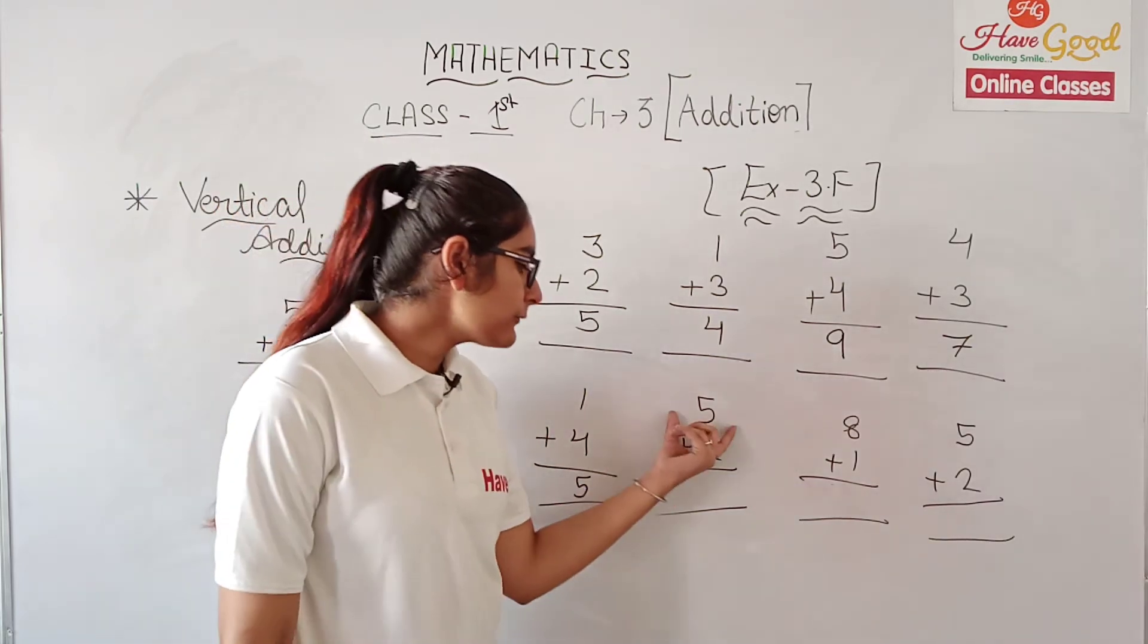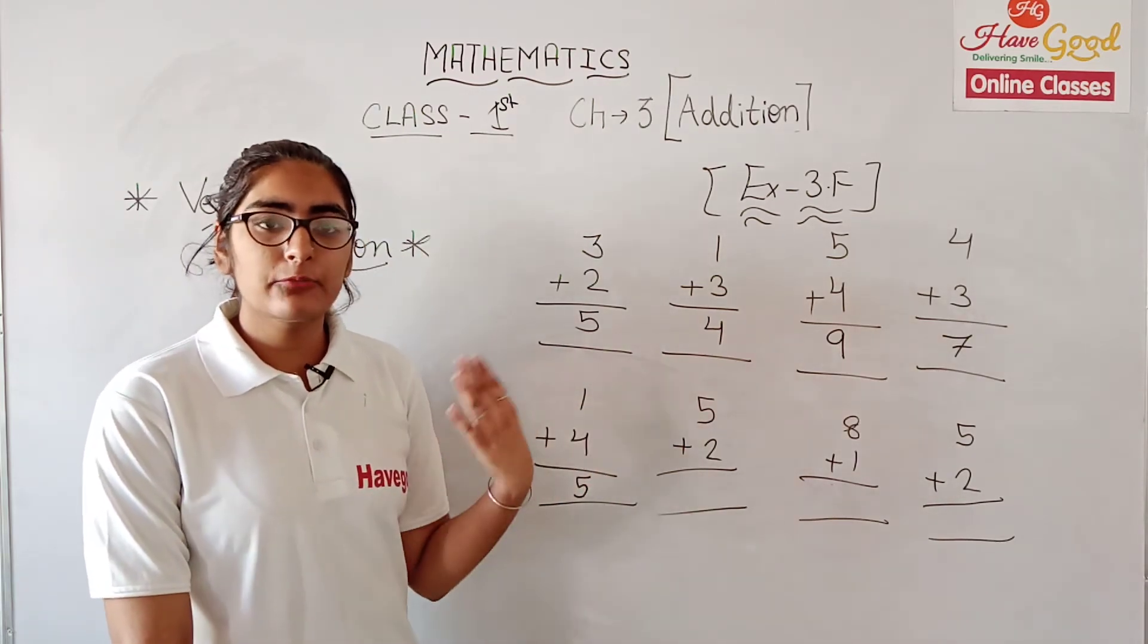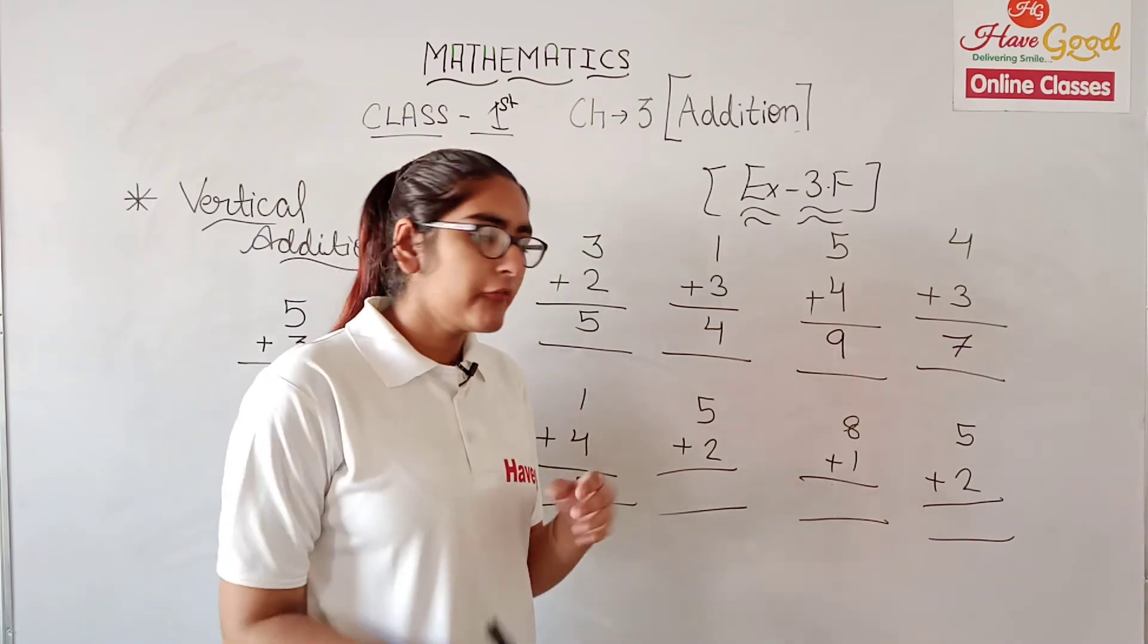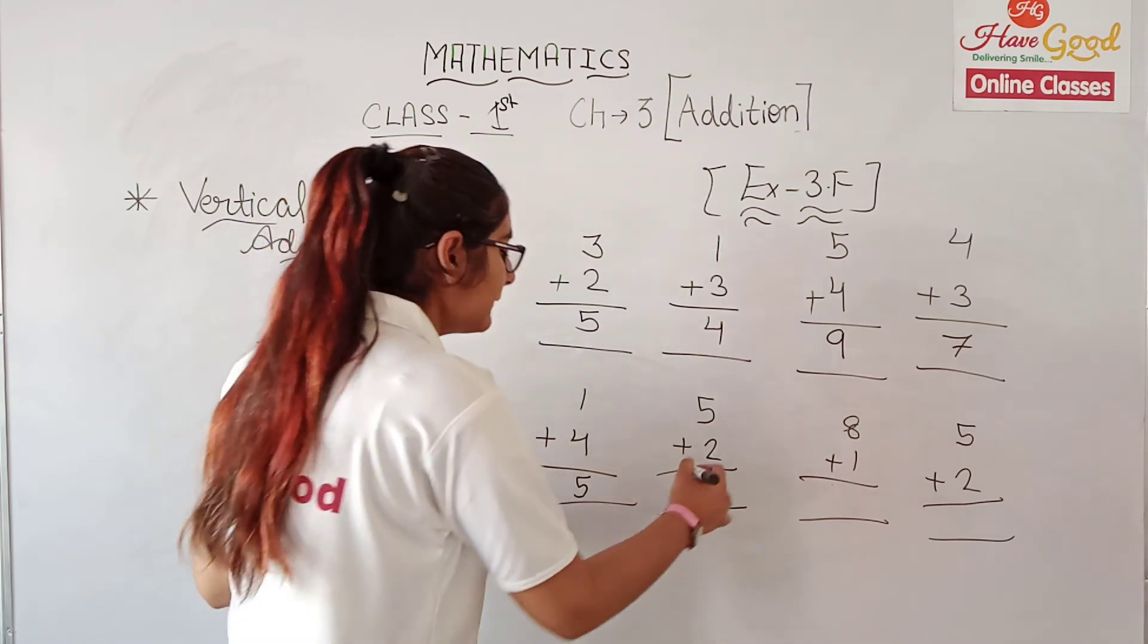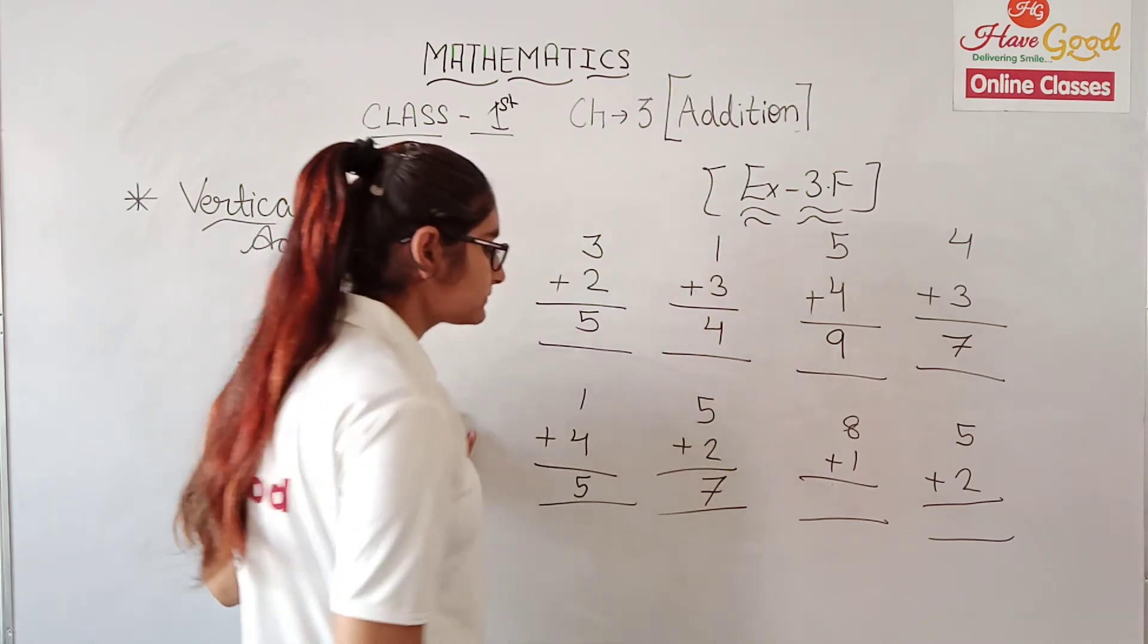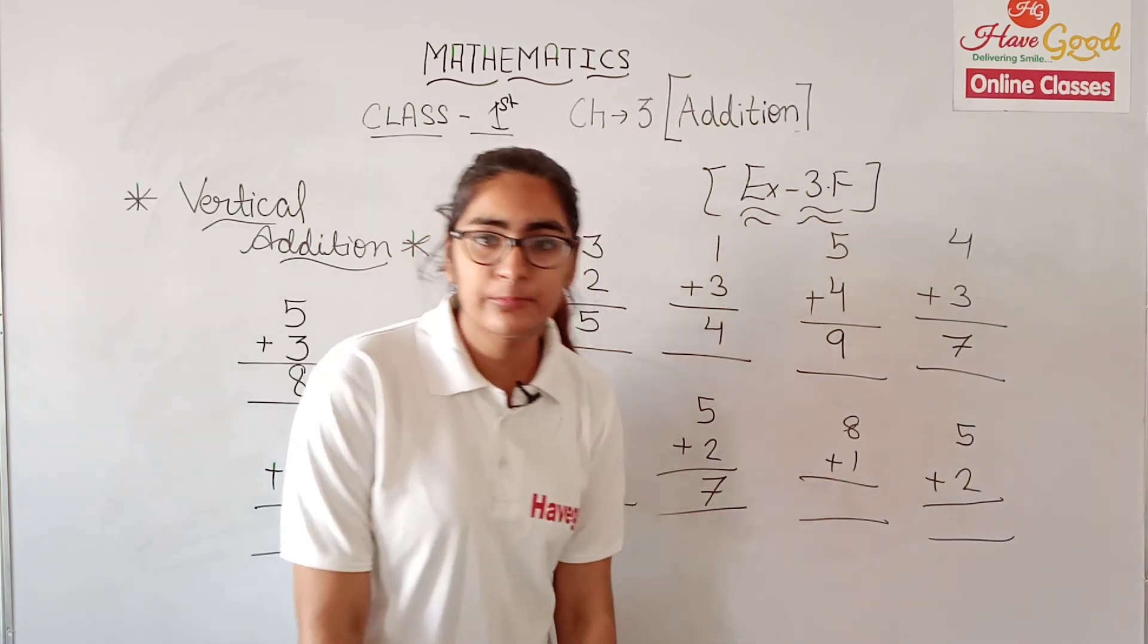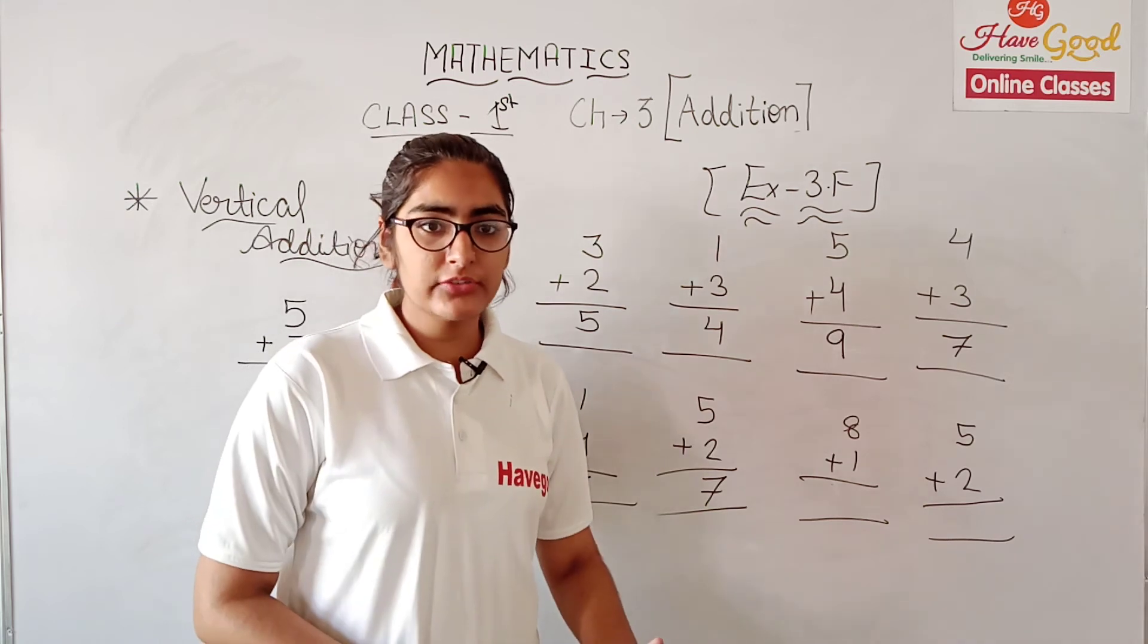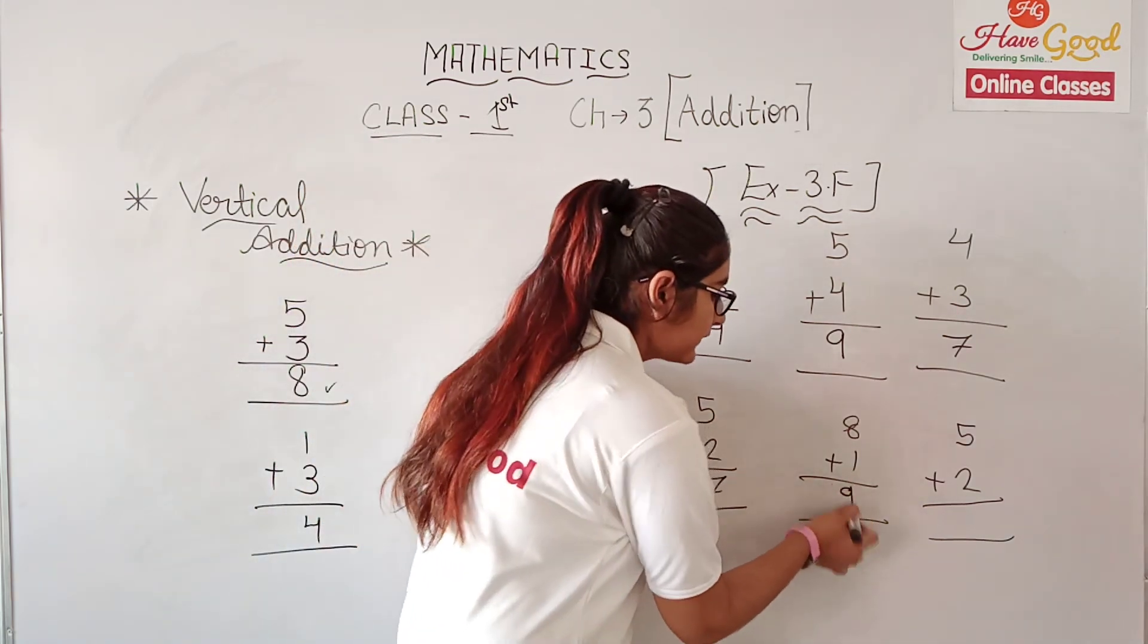Now we have 5 plus 2. We start at 5 and forward count 2: 6, 7. So our answer is 7. Then 8 plus 1: we start at 8, forward counting 1, and we get 9. So here our answer is 9.